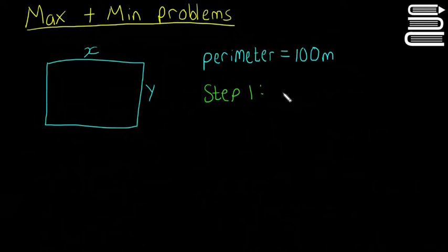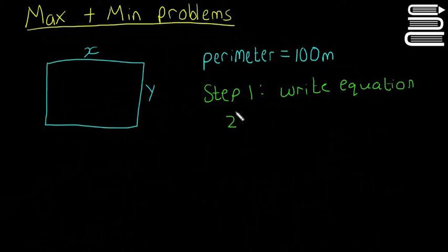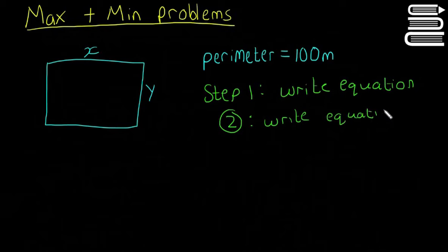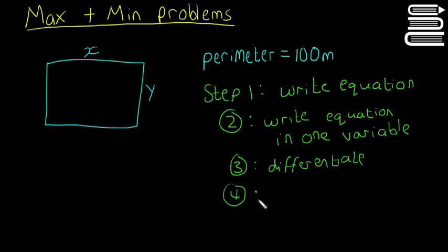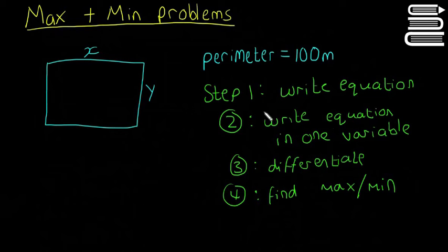Step one is to write our equation — that's just to start the problem. Step two is to write the equation again, but this time in one variable. Step three is to differentiate. And step four is to find the maximum or minimum. Hopefully those steps make sense now, and they'll make more sense once we start the question.